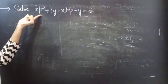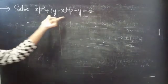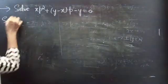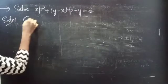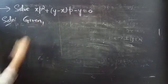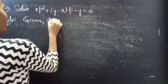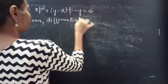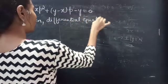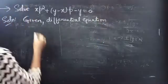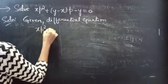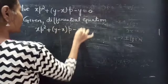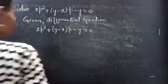Problem: solve xp² + (y - x)p - y = 0. The given differential equation is xp² + (y - x)p - y = 0, which is quadratic in p.